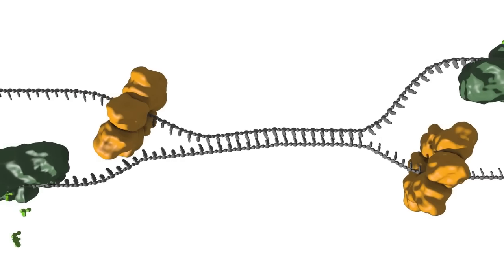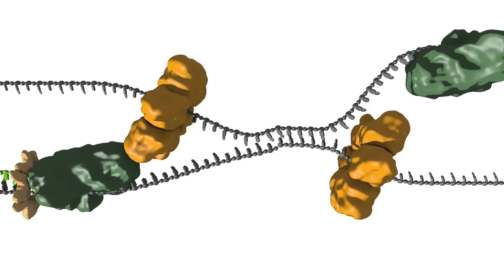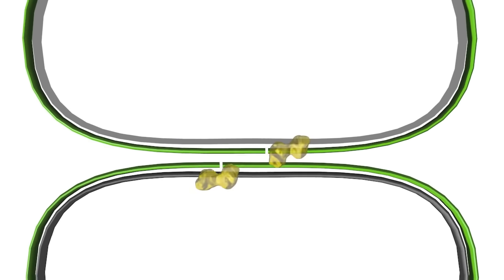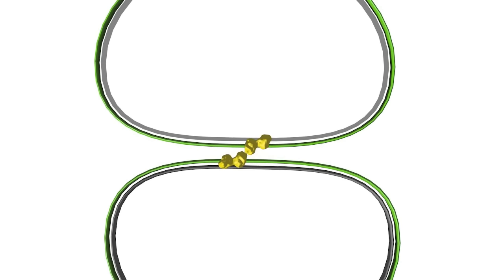Much less is known about the details of the termination of DNA replication. Once the entire chromosome is copied, the two replication forks meet each other and are dismantled. The ends of the new DNA strands are then joined, again by DNA ligase.